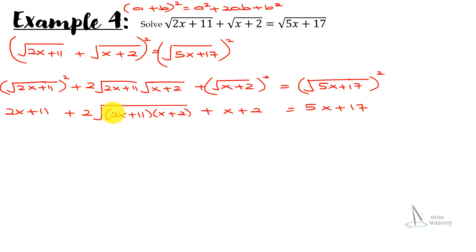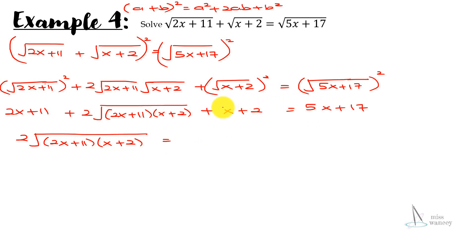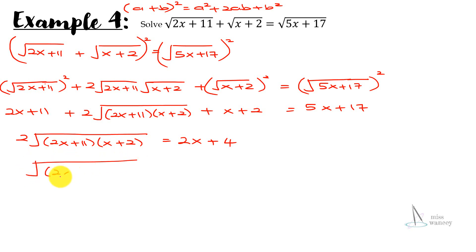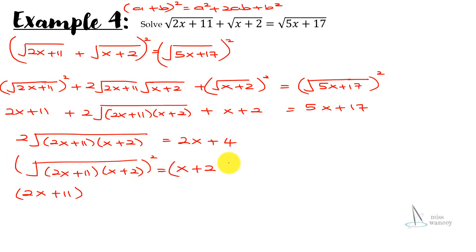Isolating the surd: 2·√((2x+11)(x+2)) equals 5x − x − 11 − 2 + 17, which simplifies to 4x − 13 + 17 = 4 + 2x... giving 2x + 4. Dividing by 2: √((2x+11)(x+2)) equals x + 2.